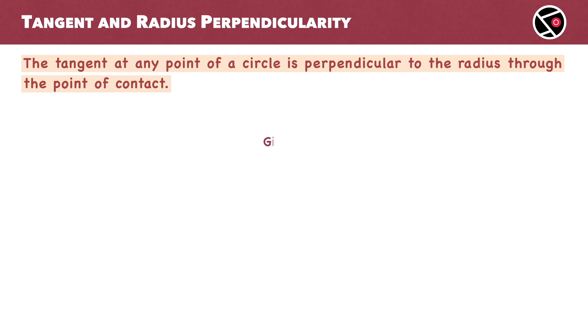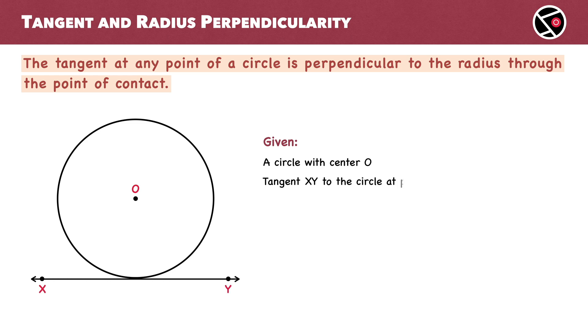So what do we have? We have a circle with center O and a tangent XY touching the circle at point A. Our goal is to prove that the radius OA is perpendicular to tangent XY. Now let's move on to the proof.